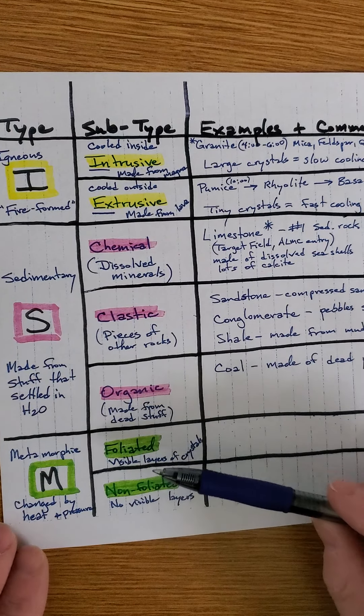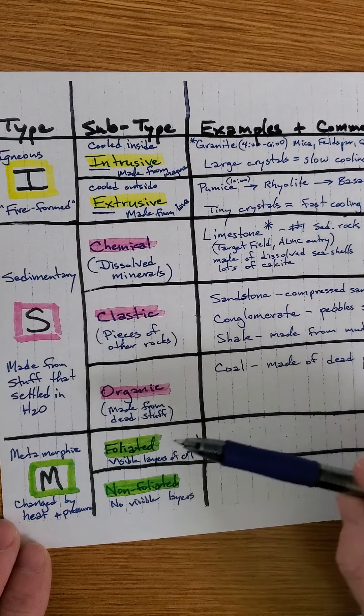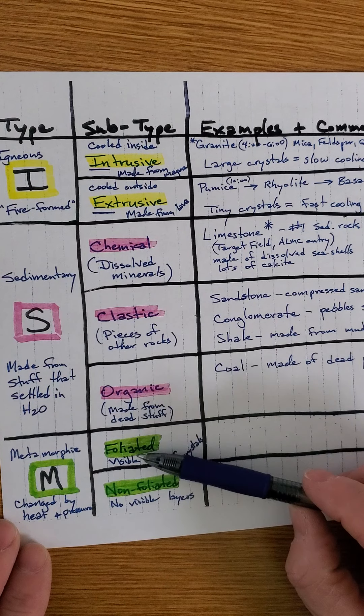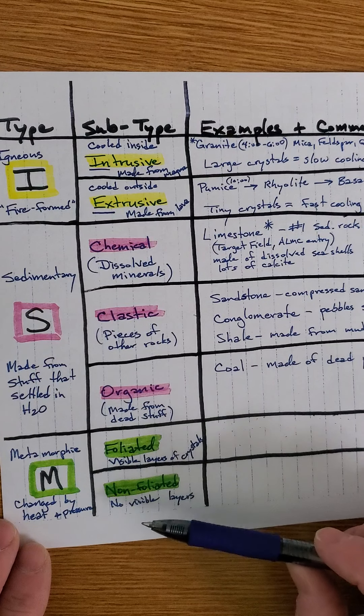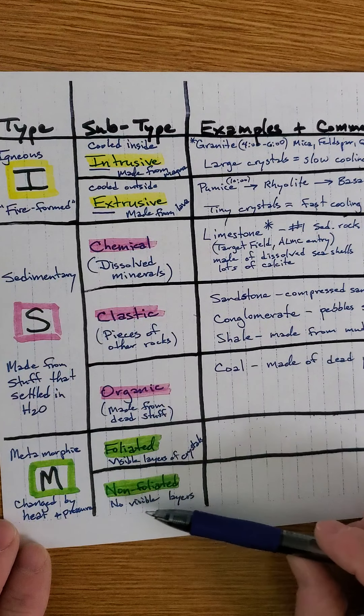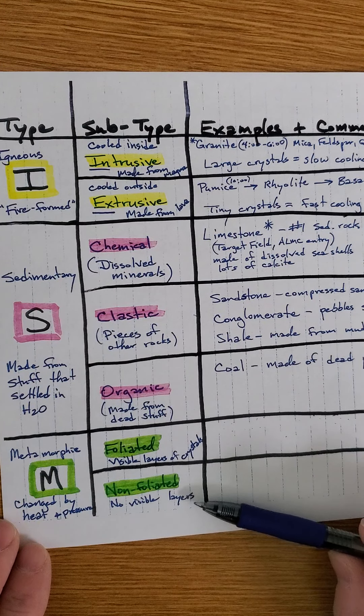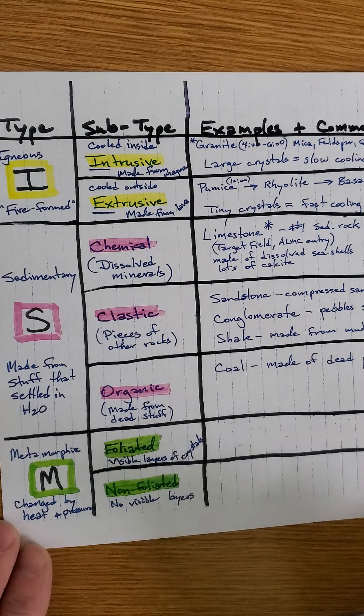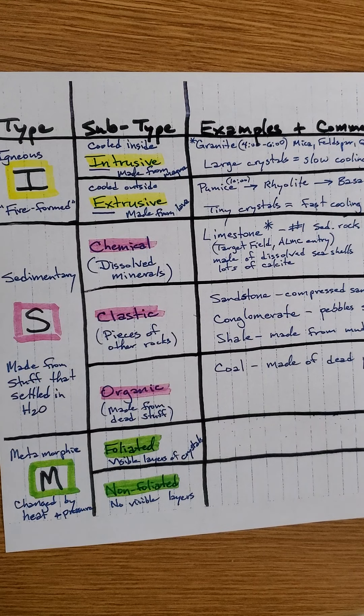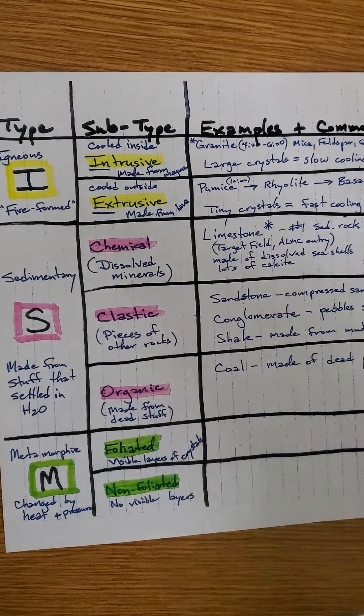The two types of metamorphic rock are foliated metamorphic rock. That means that it has visible layers of crystals and non-foliated, it doesn't have visible layers of crystals. When you change a rock with heat and pressure, you recrystallize it. Now, here comes the nudity part. Get ready. The nudity.